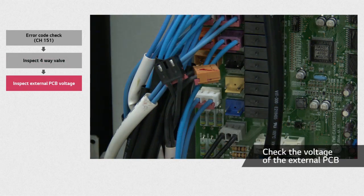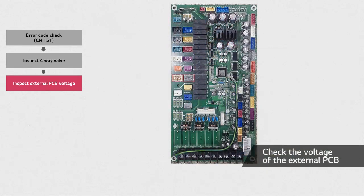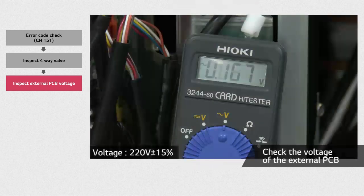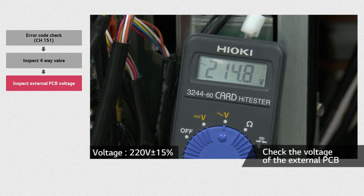Measure the voltage of the 4-way valve connectors at the external PCB. In this picture, you can see the two sockets on the external PCB for these connectors. The normal value is 220 volts.